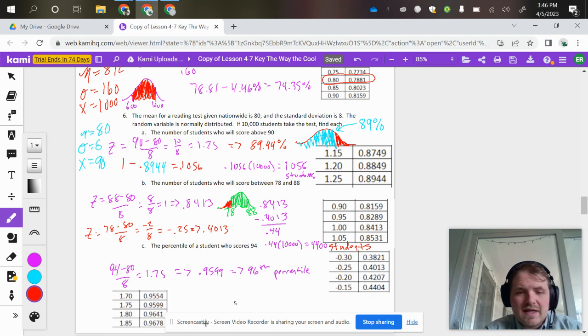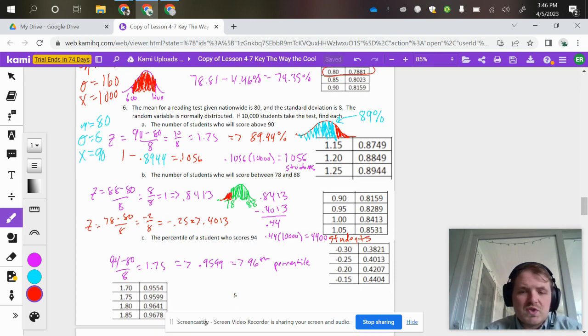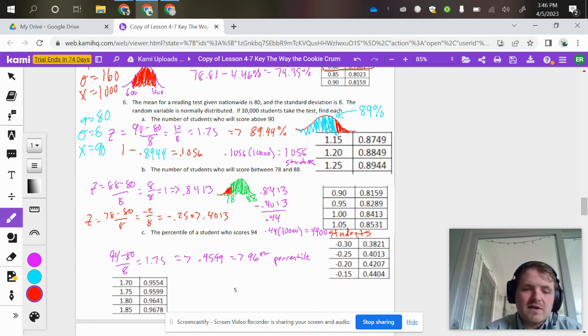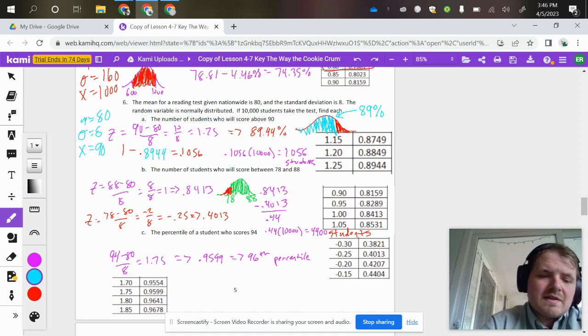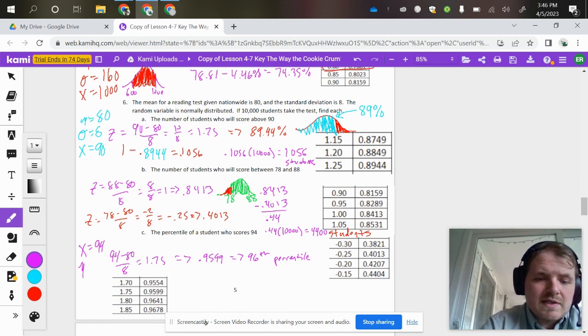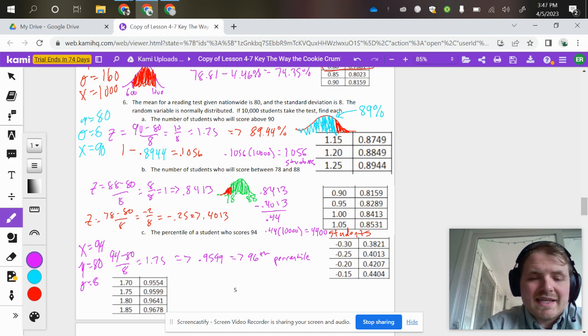Now this one, kind of a curveball—part C asks for the percentile of a student who scores 94. We did this on a previous assignment where you had to find the percentile. That was more complicated than this, in my opinion. This is more straightforward: your X value is 94, your mean is 80, and your standard deviation is 8. That gives you a z-score of 1.75.